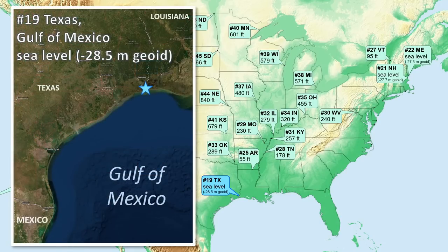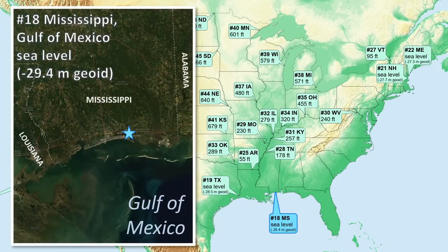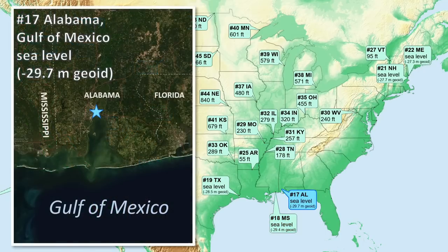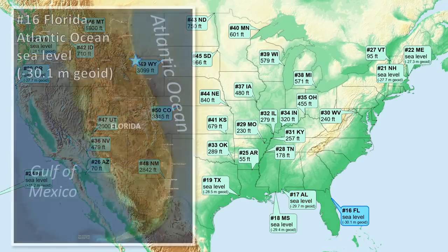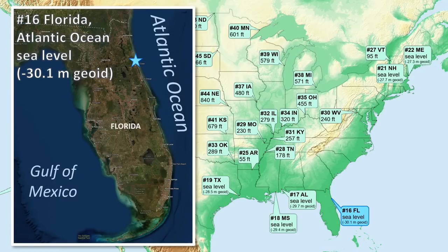Down to the Gulf of Mexico, geoid low point locations are up in bays or estuary locations. Number 19 is Texas, in the Sabine Lake estuary. Number 18 is Mississippi, in the back bay of Biloxi. Number 17 is Alabama, with the geoid low point up in Grand Bay. Number 16 is Florida, with the geoid low point near a town called Palm Coast.